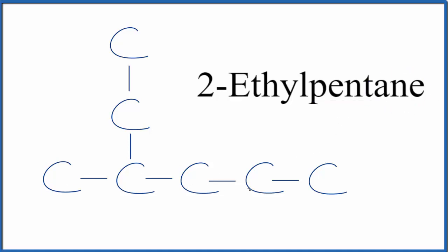So you draw 1, 2, 3, 4, 5. Then on the second one, you could put an ethyl group. That's these two carbons here.